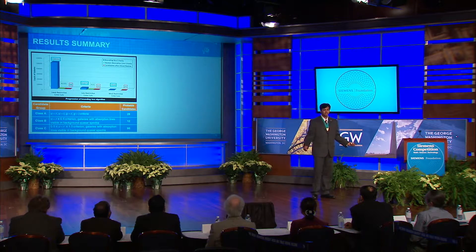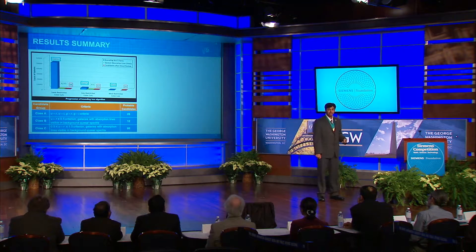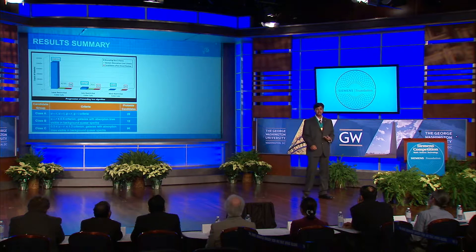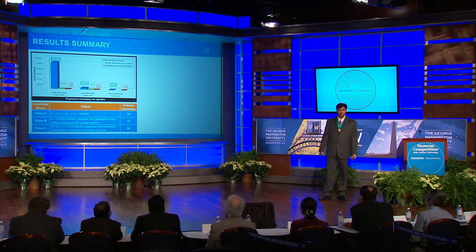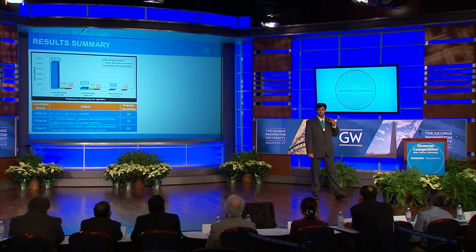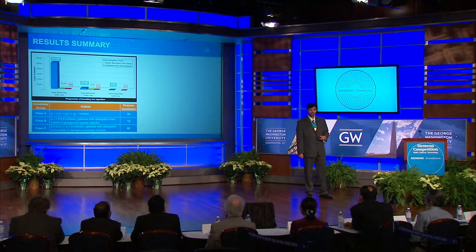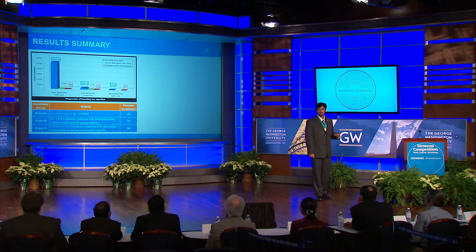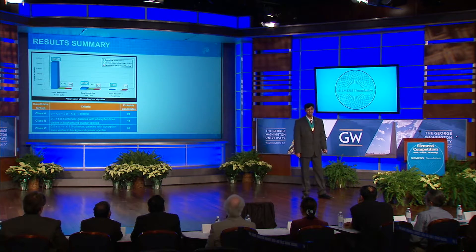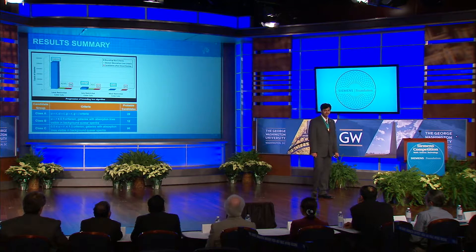Looking at the results, I began with hundreds of millions of SDSS galaxies and ended up with only 25 high probability candidates. Those in class A originated from the most selective color criterion. Those from classes B and C were also selective, but originated from the two less restrictive criteria and the criterion of having calcium-2 absorption lines in background quasar spectra.